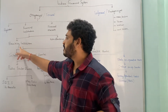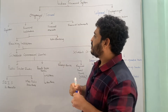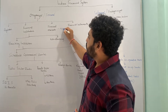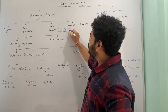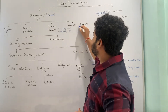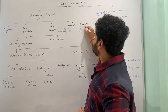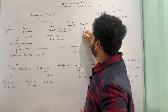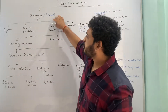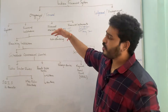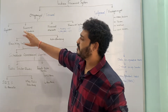Then we had financial institutions, which can be either banking institutions or non-banking institutions. Then we had financial markets — both money market and capital market. The money market was for short-term and the capital market for long-term. Then we had financial instruments for short-term, medium-term, and long-term. So this was a comprehensive overview of how the organized or formal Indian financial system can be sub-classified.